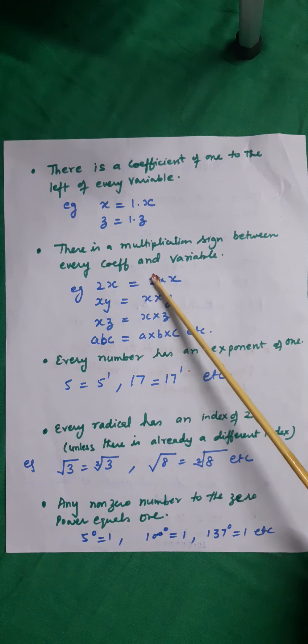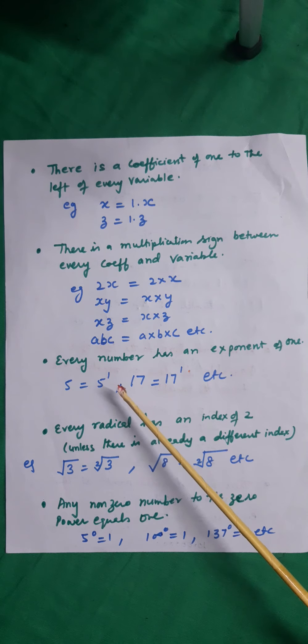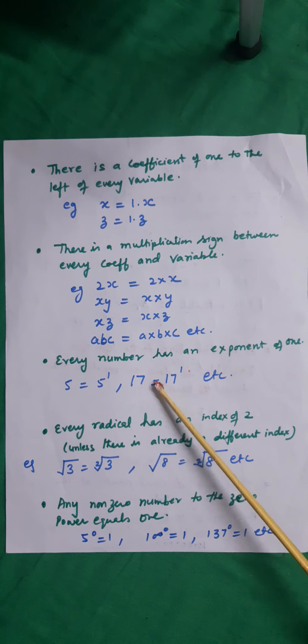So here, the multiplication sign was invisible. Every number has an exponent 1. Exponent here means the power 1. 5 can be written as 5 raised to the power 1, but we don't write it. 17 can be written as 17 raised to the power 1.